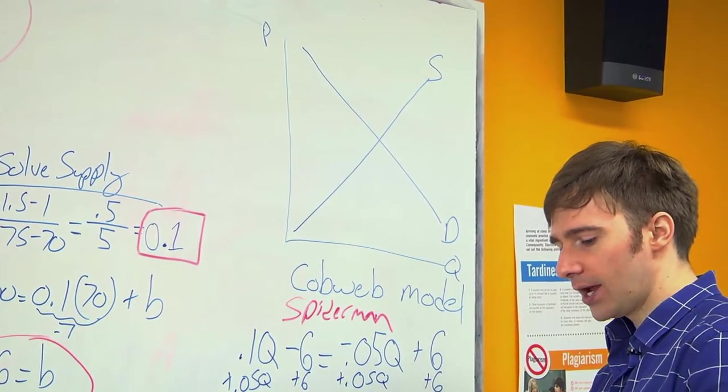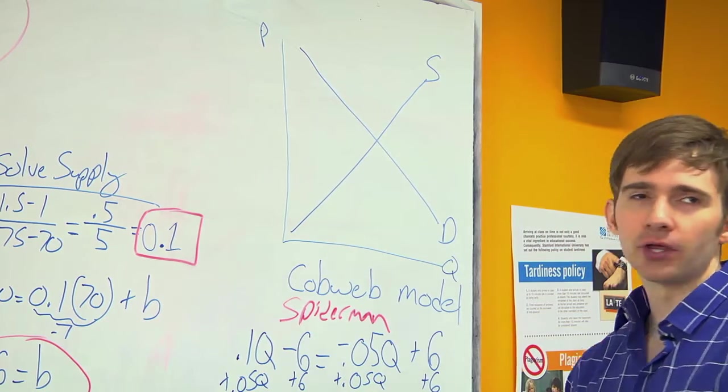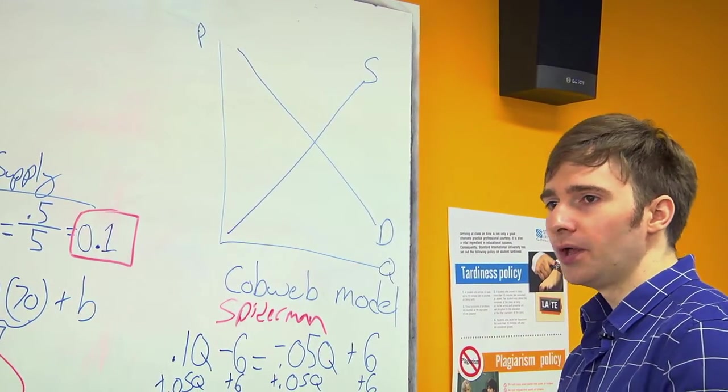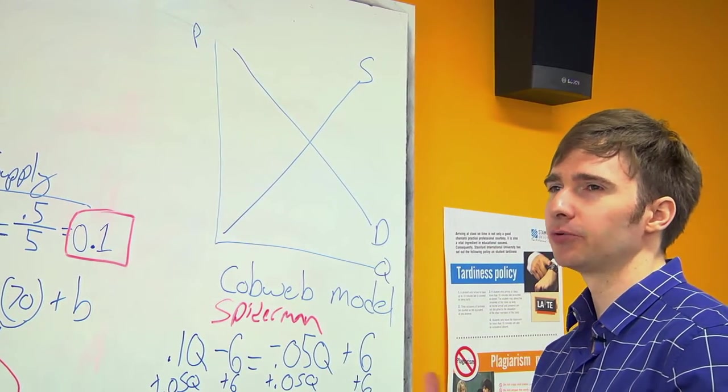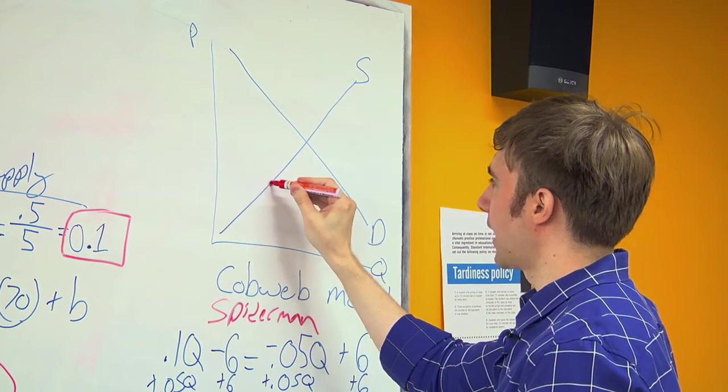And the way that the cobweb model works for a commodity is if you were to think of a farmer. One season, the farmer has a drought. It isn't able to grow that much. So he's willing to supply this amount.